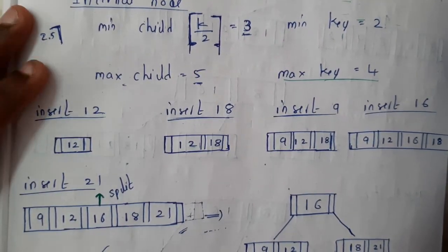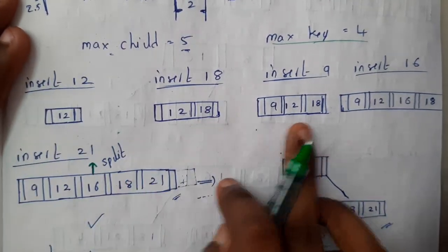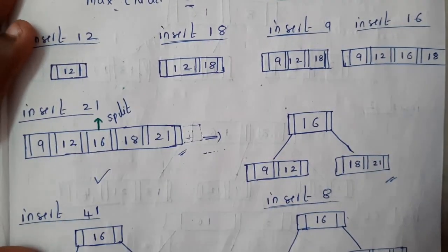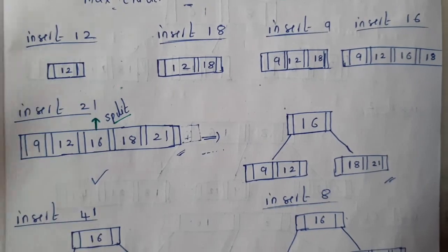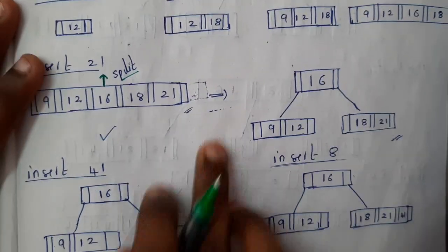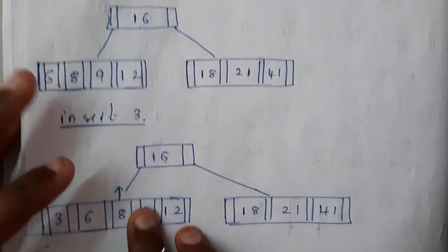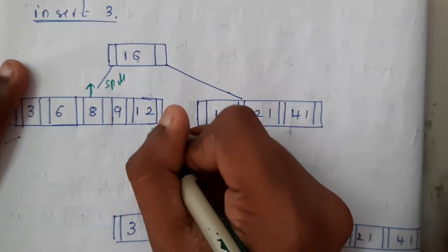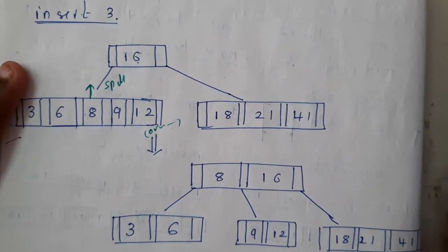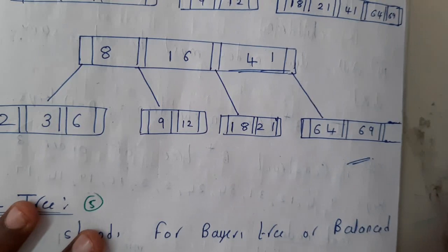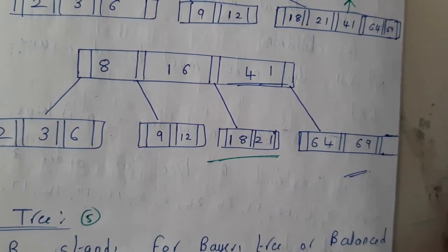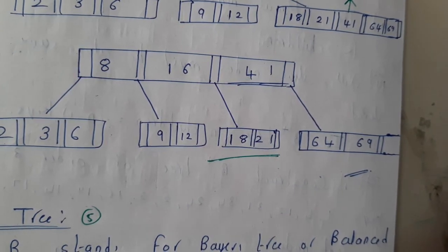Let us go through the solution I did in the book so you can have a clear idea. We inserted 12, 18, 9, 16 — reached 4, no issue. Once we reached 5 we split it up — use the word 'split' and write 'overflow' at that point, because it looks good and the evaluator understands what you're doing. We continued and again reached a split. The final answer in both situations is the same. In the next tutorial we'll be going through B+ tree — thank you for watching.